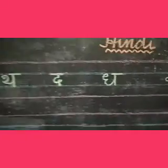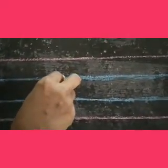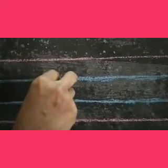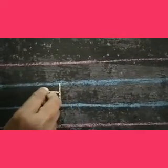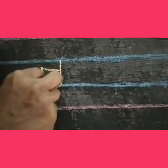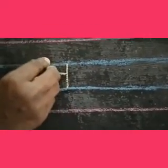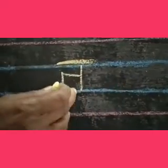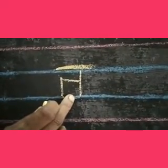Now I am going to teach you the formation of the letters. First we will draw one standing line, then one sleeping line, then again one small one, then on top a line. This is called Tha.